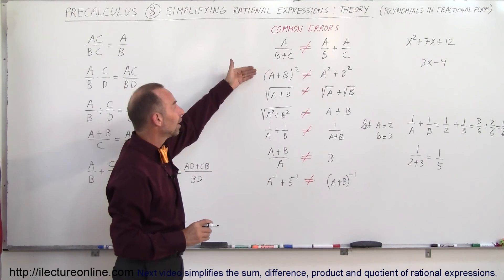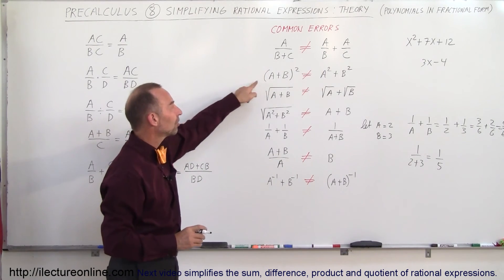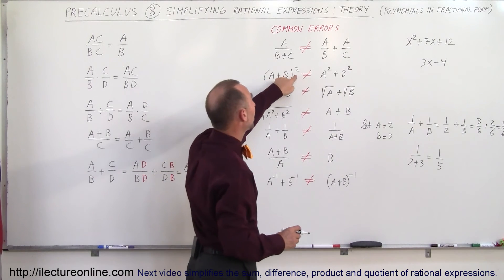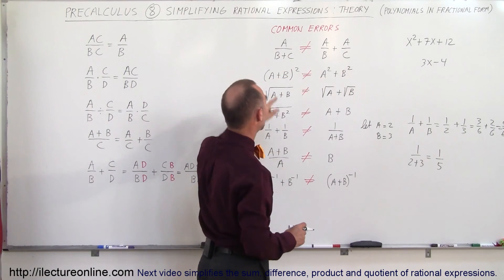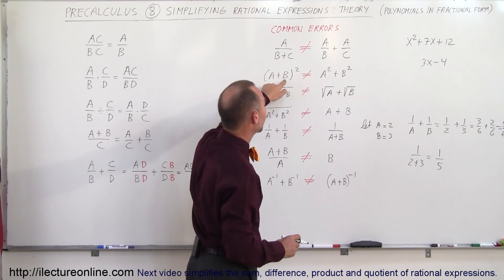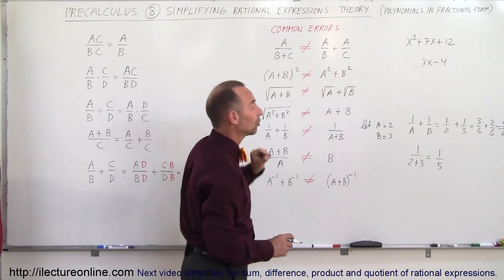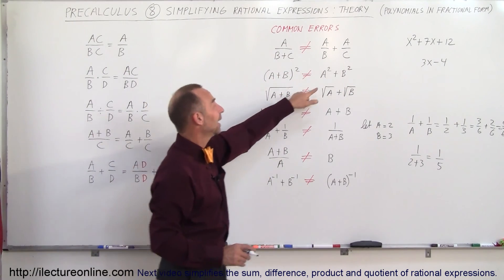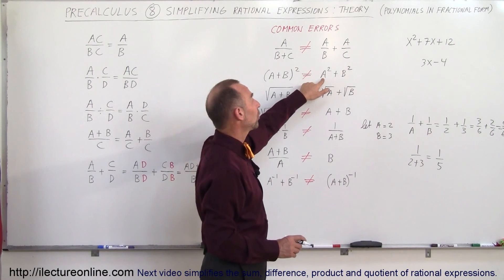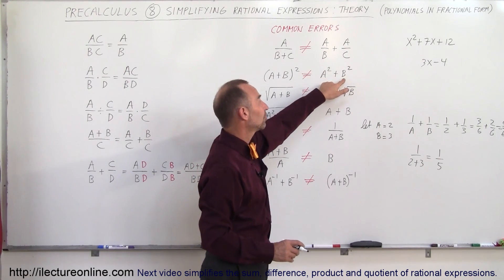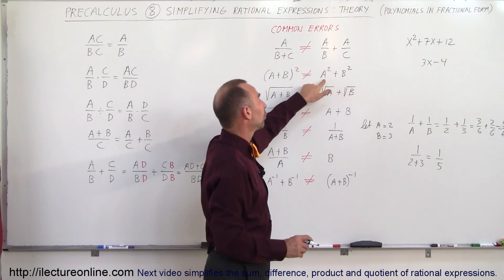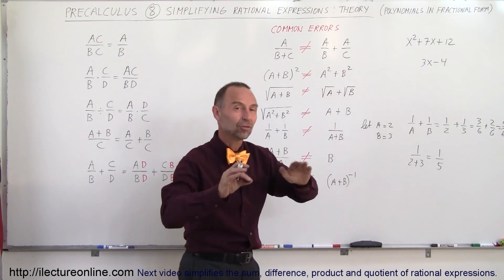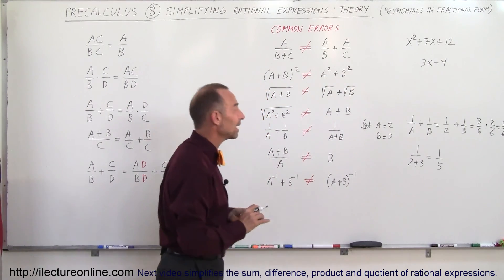It is always easy to quickly plug in some numbers and see if you get the same result. For example, is (a plus b) squared the same as a squared plus b squared? If a is 2 and b is 3, then (2 plus 3) squared is 5 squared, which is 25. But 2 squared plus 3 squared is 4 plus 9, which is 13. Since 25 is not equal to 13, you can show yourself that these are not the same thing.